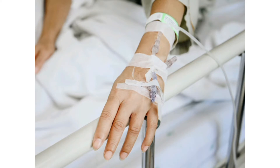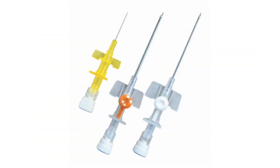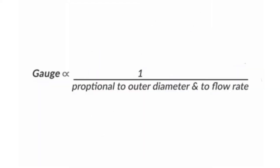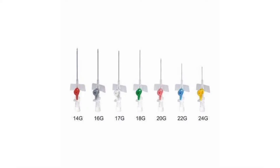We differentiate cannulas on the basis of their gauges. The more the gauge is, the less is the external diameter of the cannula and the flow rate. In other words, gauge is inversely proportional to the outer diameter and flow rate of the cannula. In simple words, the greater the gauge, the smaller is the cannula.